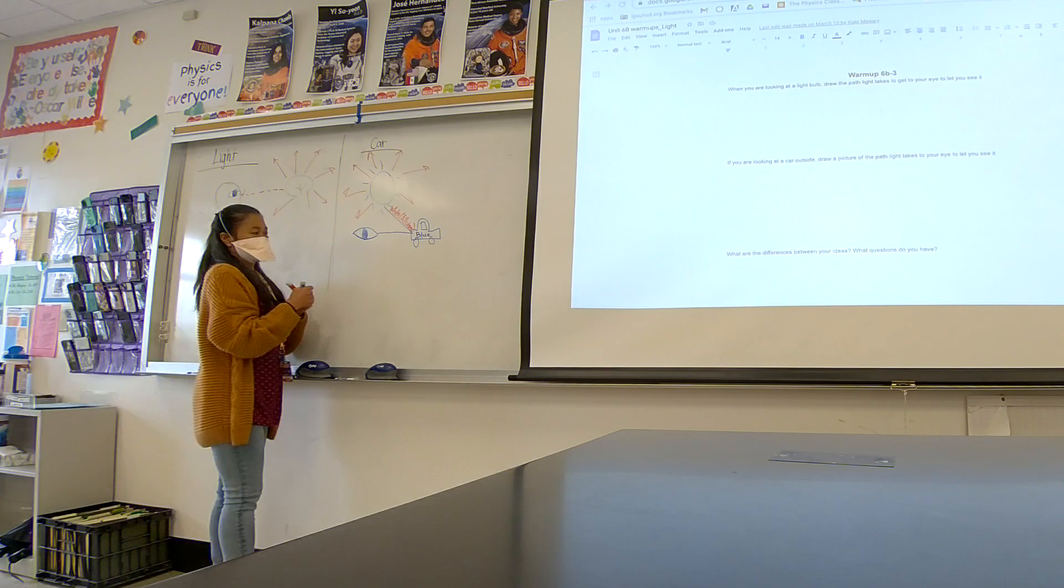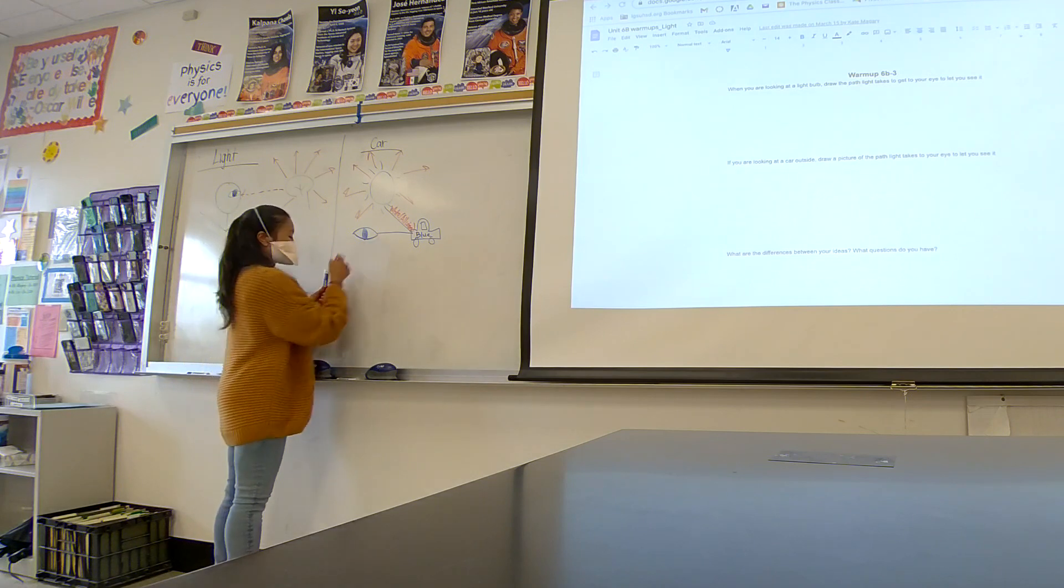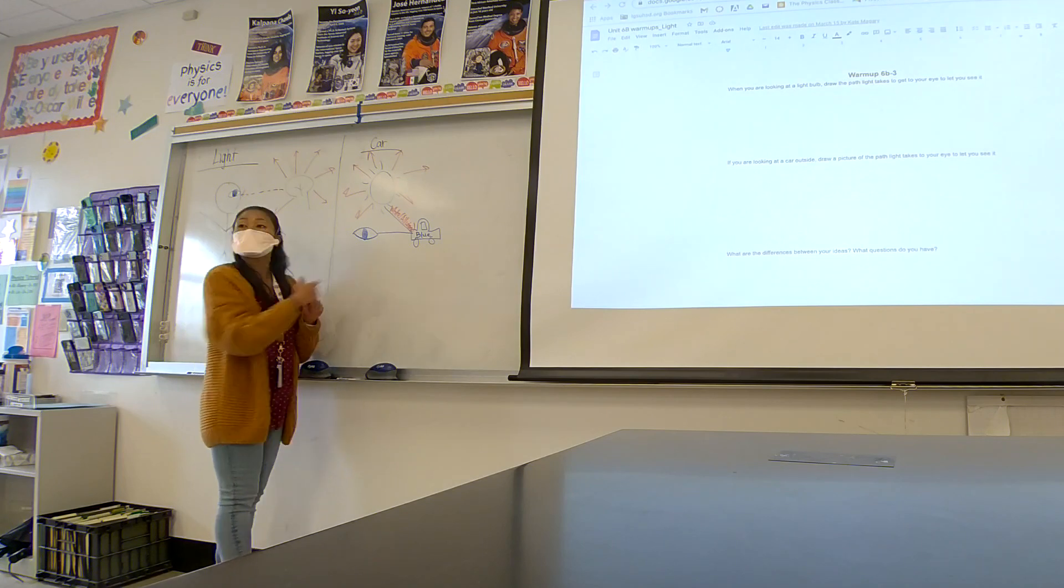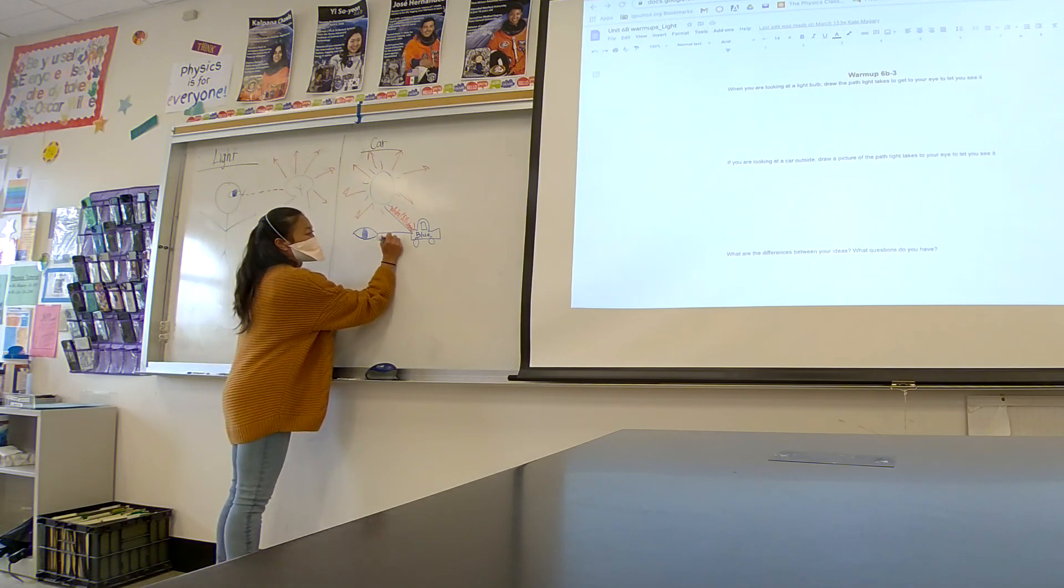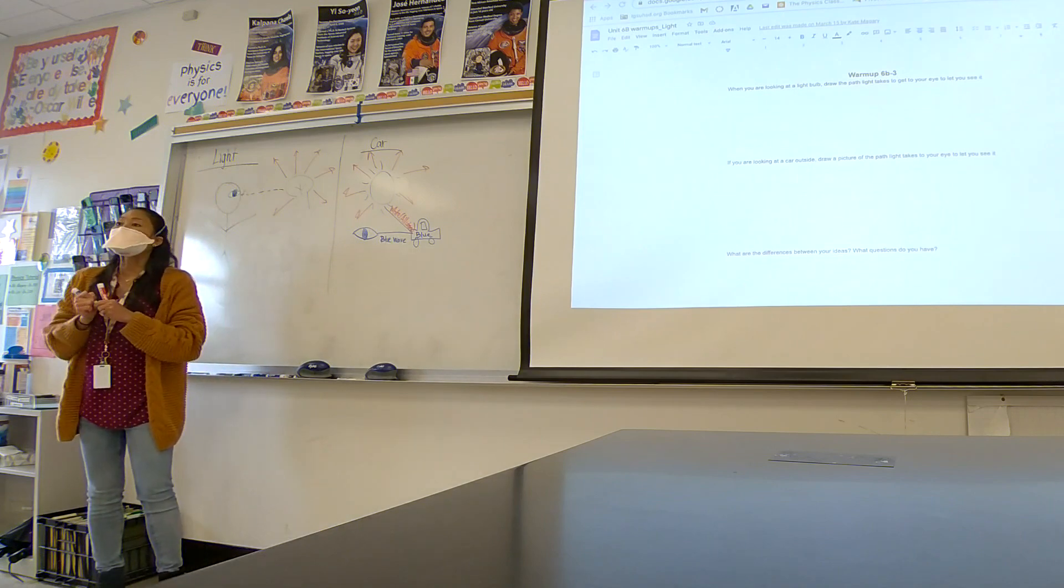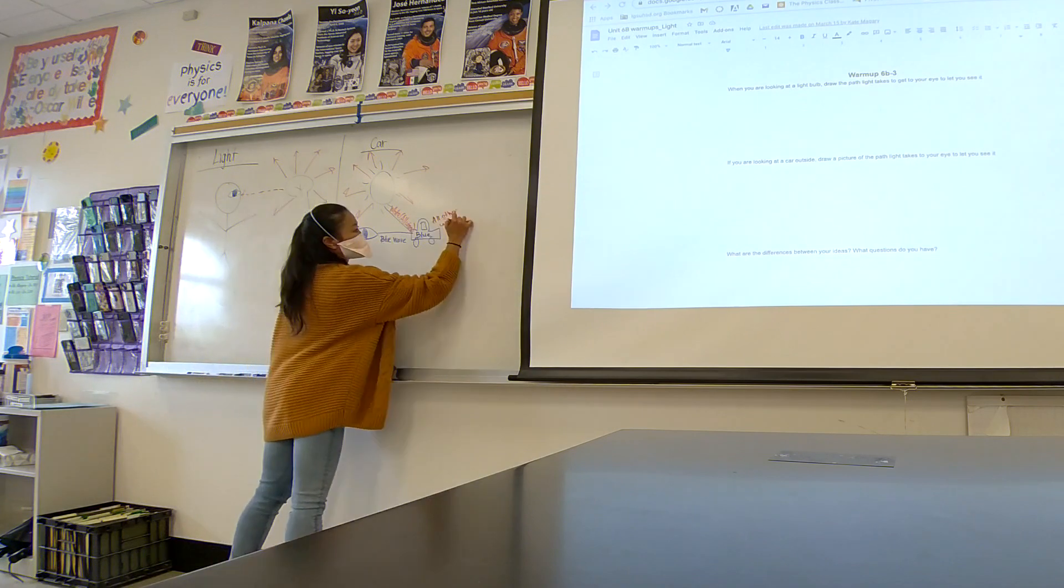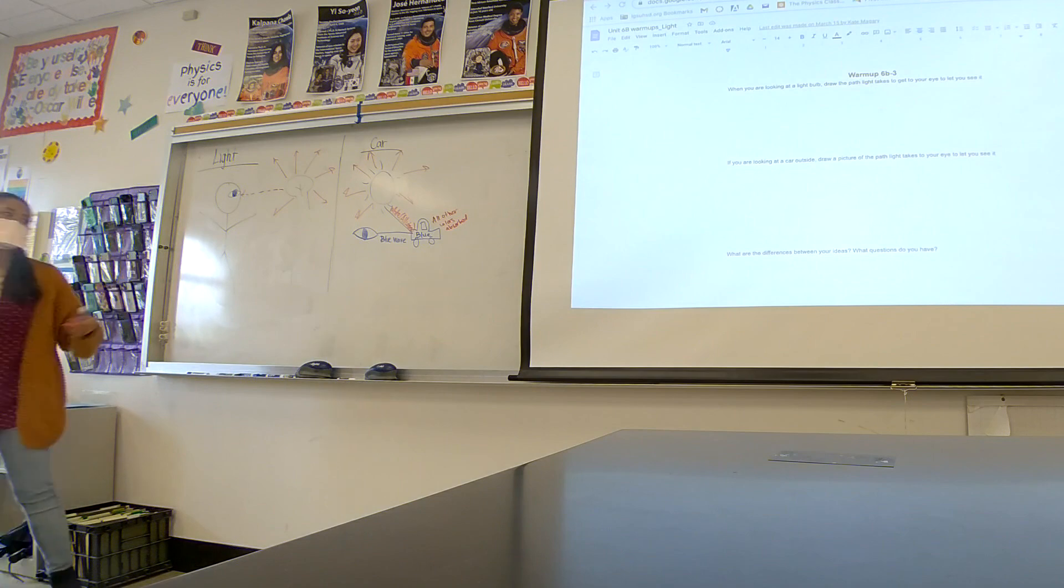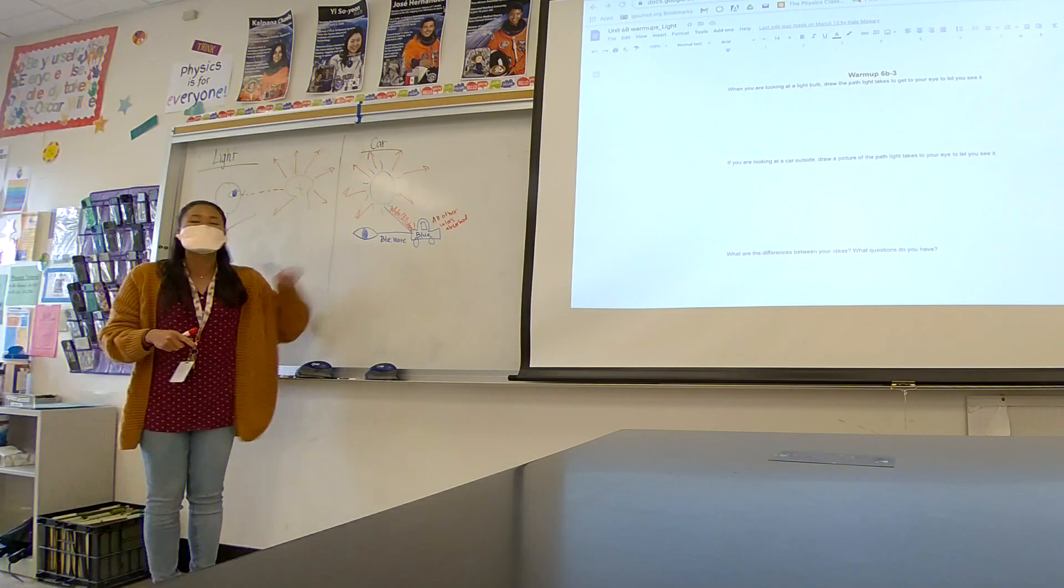So the reason why we can see blue color is because that is the only light wave that is reflected off the surface. Whereas when white light hits an object, all the other colors besides the reflected one are absorbed. So red is absorbed, yellow is absorbed, purple and orange. The only thing reflected is the blue.